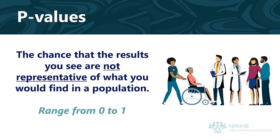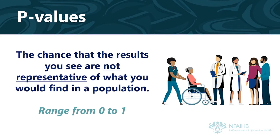P-values, like confidence intervals, are a common way to decide if data results are due to something real happening in the populations rather than chance. A p-value means the chance that the results you see are not representative of what we would find in the population.